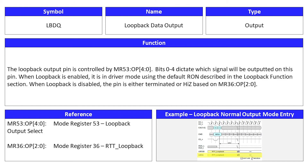The next signal is loopback data output, which is an output signal, and its symbol is LBDQ. The loopback output pin is controlled by Mode Register 53, loopback output select. Bits 0 through 4 dictate which signal will be outputted on this pin. When loopback is enabled, it is in driver mode using the default RON described in the loopback function section. When loopback is disabled, the pin is either terminated or high-Z based on Mode Register 36, RTT loopback.